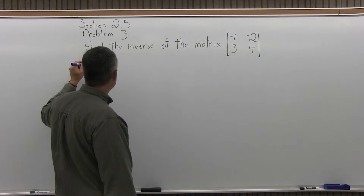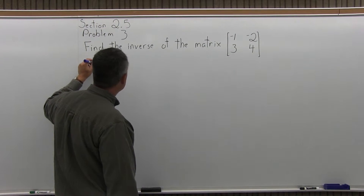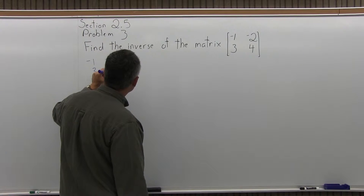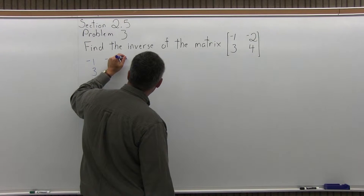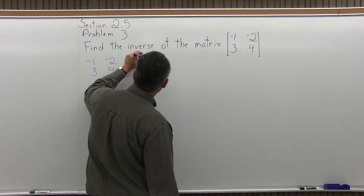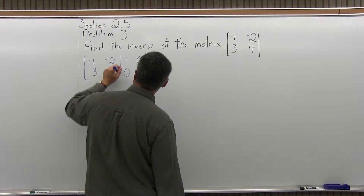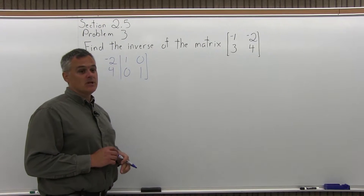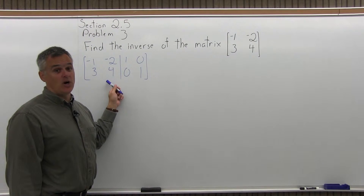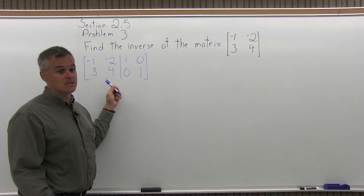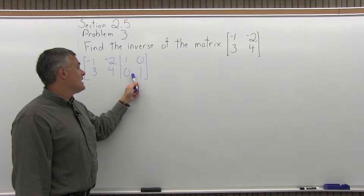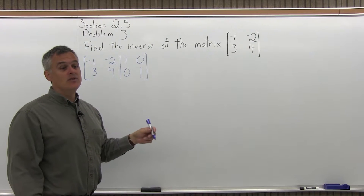So as I start this off, I'm going to write the matrix they gave me — negative 1, negative 2 in the top row, 3, 4 in the bottom row — and right next to that I'm going to write an identity matrix: 1, 0 in the top row, 0, 1 in the bottom row. This will be treated as one big matrix. We're going to do whatever steps we need to make the left half into an identity matrix, and those steps will turn the right half into the inverse.